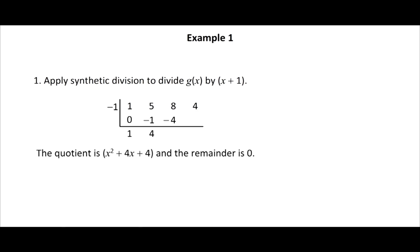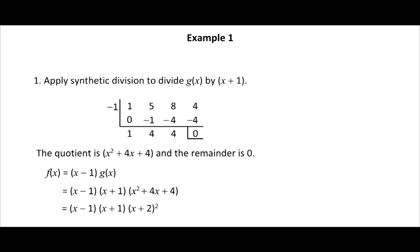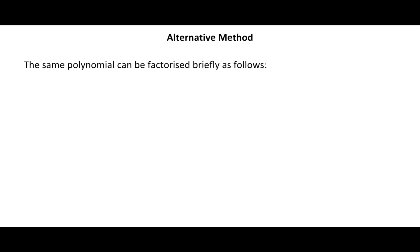The quotient is x squared plus 4x plus 4 and the remainder is zero. Therefore f(x) equals (x minus 1) times (x plus 1) times (x squared plus 4x plus 4), which equals (x minus 1) times (x plus 1) times (x plus 2) squared. The same polynomial can be factorized briefly as follows: f(x) equals x to the power 4 plus 4x cubed plus 3x squared minus 4x minus 4.